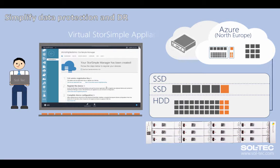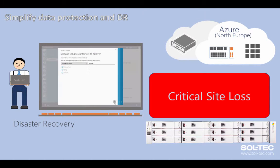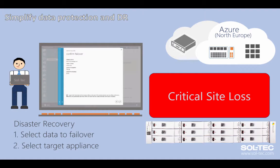StoreSimple 8000 comes with a virtual storage appliance hosted in the cloud. In a critical site outage, in the StoreSimple Manager simply select the volume containers that you wish to fail over, select the target appliance — this can either be a virtual appliance in the cloud or a secondary physical appliance on site — and then confirm the failover.